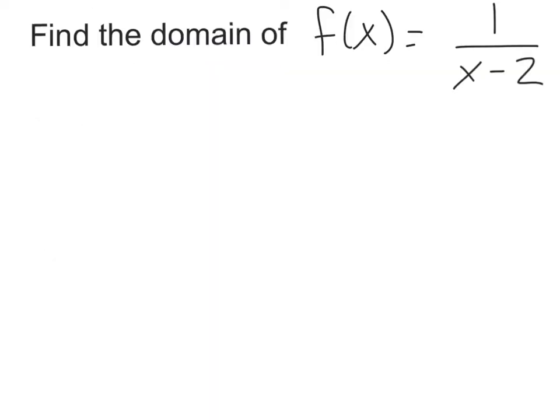One more domain problem: f of x equals 1 over (x minus 2). We need to think about what can go wrong. You can subtract any number by 2, but a fraction becomes undefined when the denominator is 0. When x is 2, we get 1 over (2 minus 2), which is 1 over 0 — that's bad. So 2 is an invalid input. The domain is x not equal to 2, meaning x can be anything except 2.